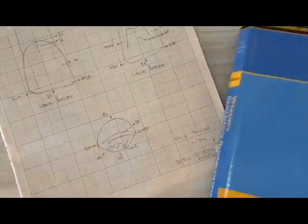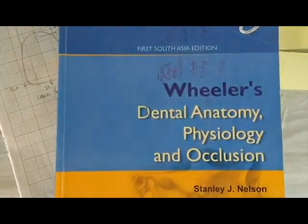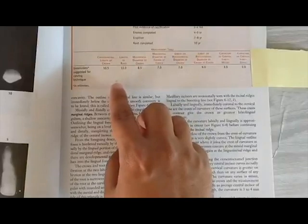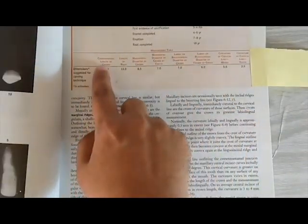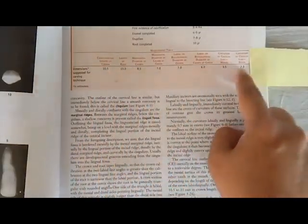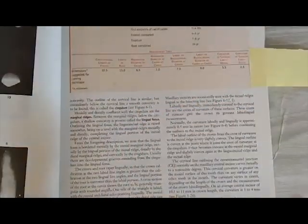The second thing that you require is the proper dimensions of the tooth. For the dimensions of the tooth, again in your book you can see the cervical incisal length of the crown. All these measurements are given that will help you out in drawing of the teeth.